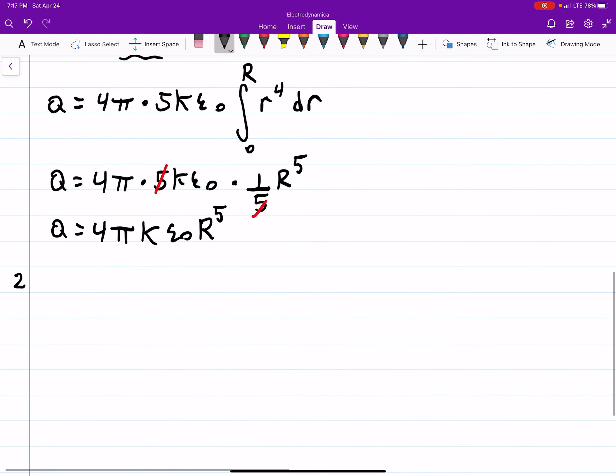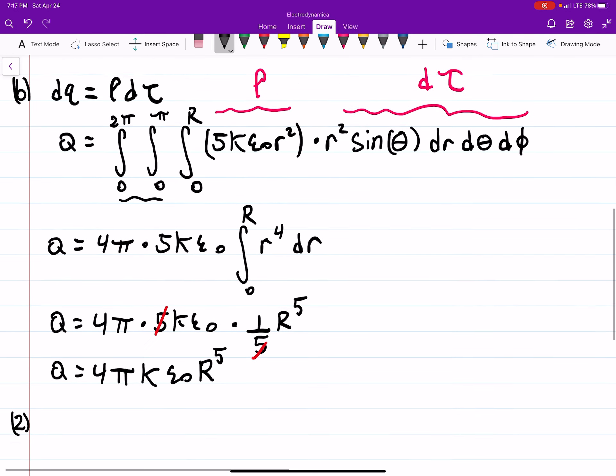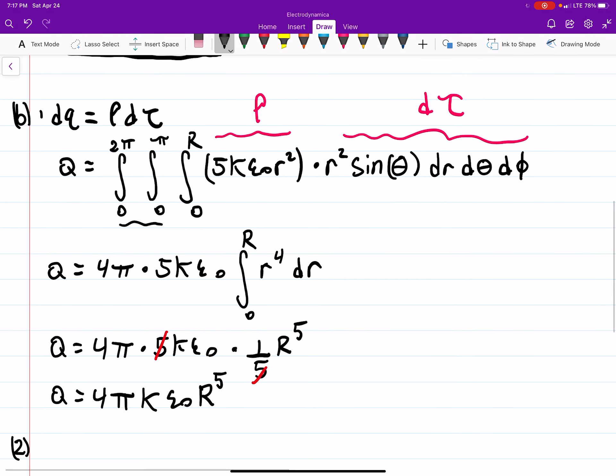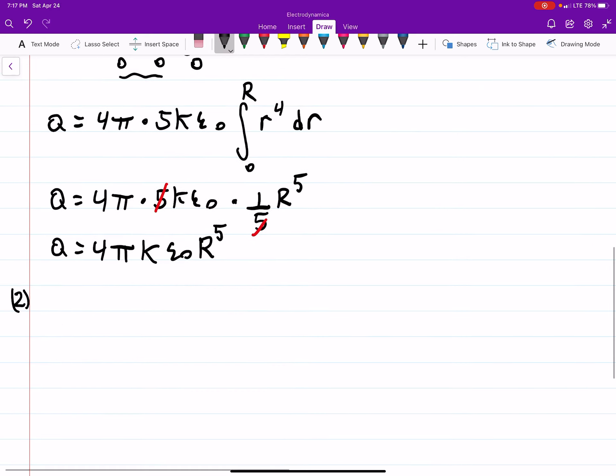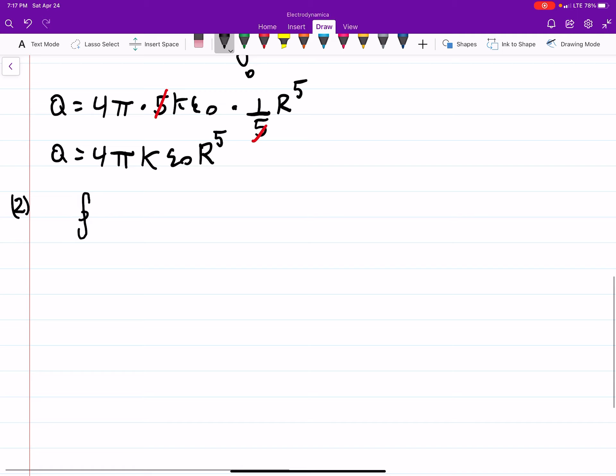The other way is to use Gauss's law. So this was one way, the other way is to consider using Gauss's law. Now Gauss's law says the closed path integral of your E-field dot dA is equal to your enclosed charge divided by epsilon naught.